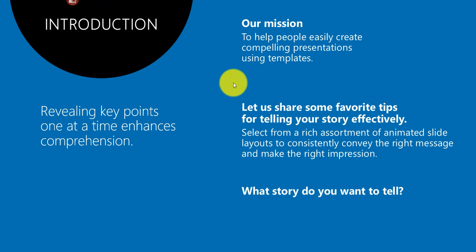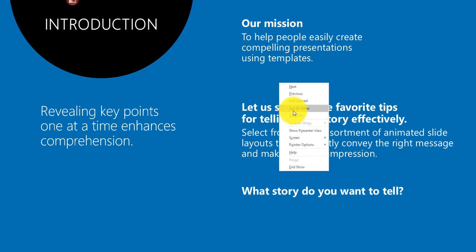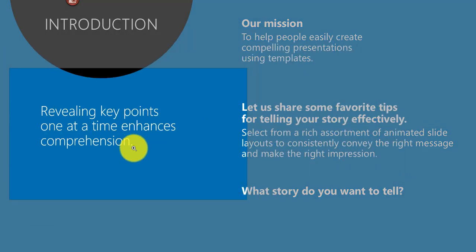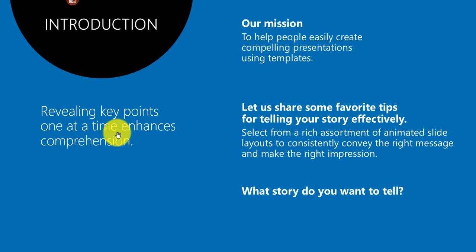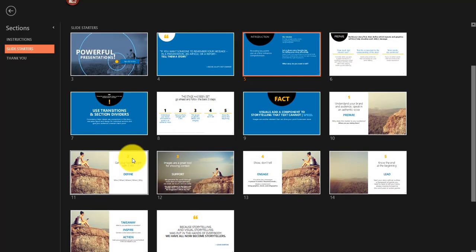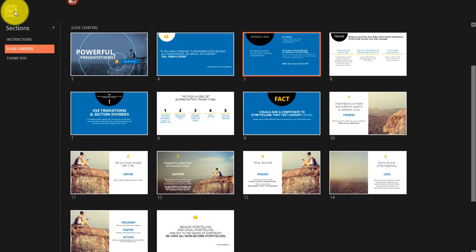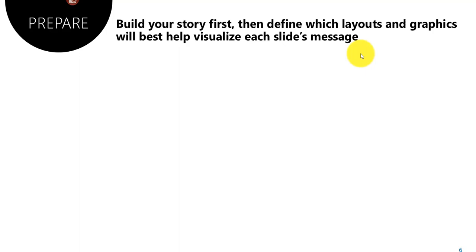To zoom in during your slideshow, right-click and select Zoom In, then move your mouse to where you want to zoom and click. Press Escape when finished to return to the slideshow. You can also view thumbnails of all slides by right-clicking and selecting See All Slides — the slide you were on will have a red border. Click any thumbnail to jump to that slide.